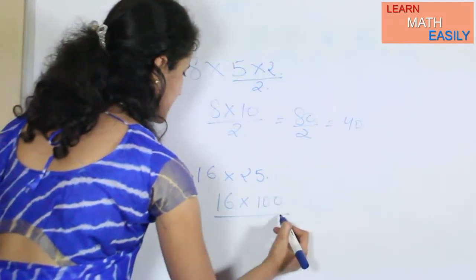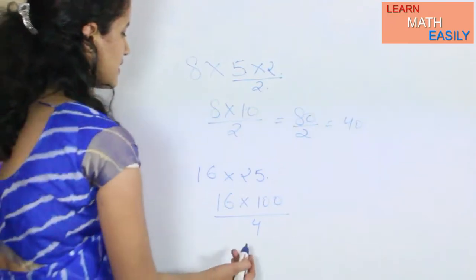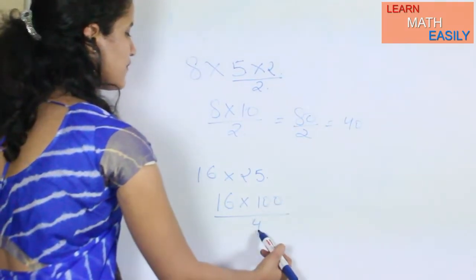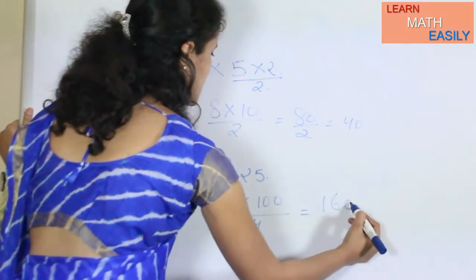So my answer is 1600 divided by 4, which is equal to 400.